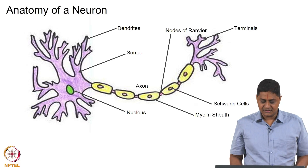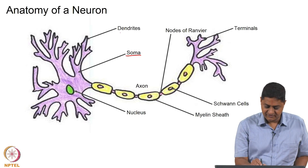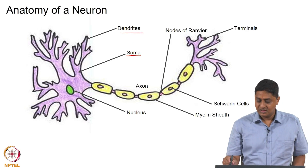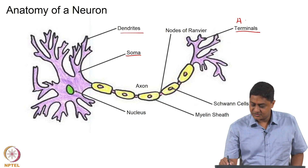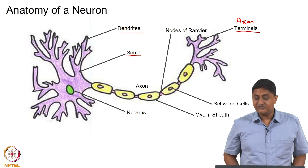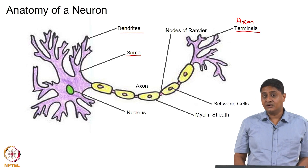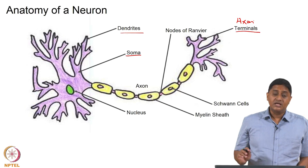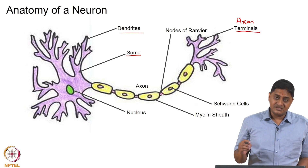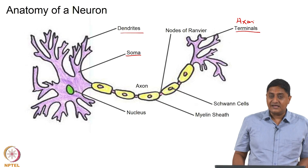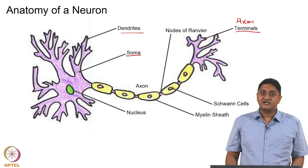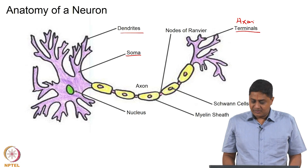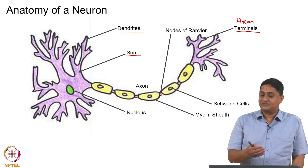We have seen earlier that a neuron has a cell body, soma, and several dendrites that are the input structures, and the output structure is the axonal terminal. If this axon terminal terminates at a muscle or a muscle fiber, then it could cause depolarization of that muscle fiber. Both neurons and muscle fibers are excitatory cells — both of them can have action potentials because they maintain a steady potential difference across their membrane.